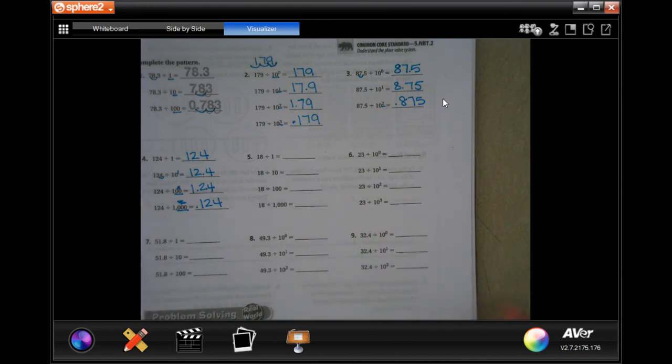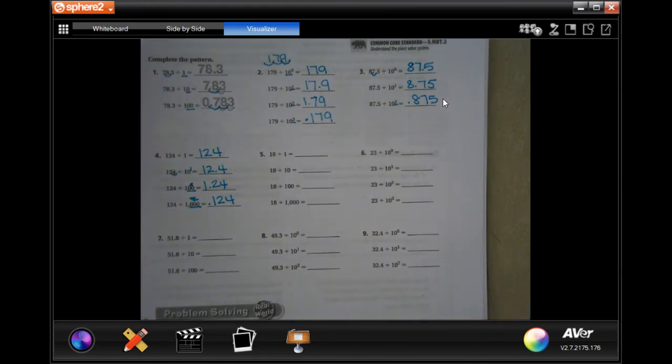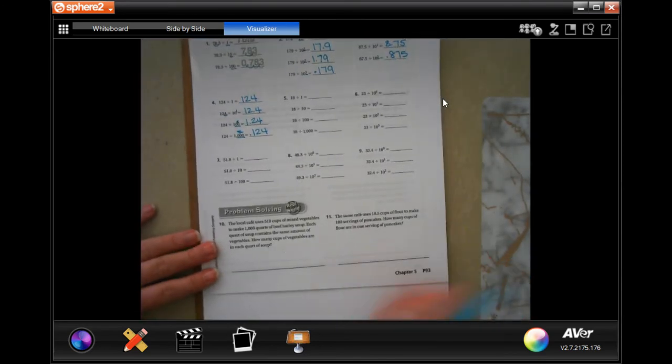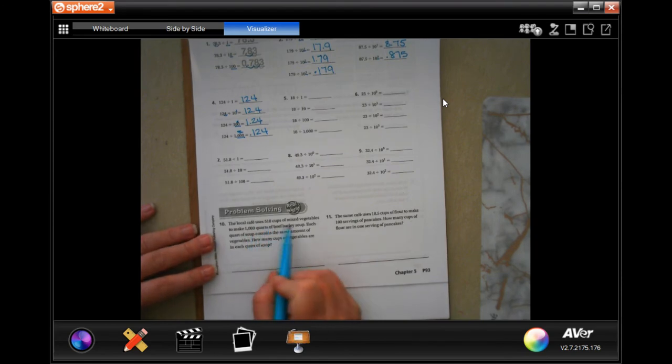You guys do five through nine. You totally can. I believe in you. We are going to do that just a little bit so that we can get down to the word problems here. The Logo Cafe uses 510 cups of mixed vegetables to make 1,000 quarts of beef barley soup. Each quart of soup contains the same amount of vegetables. How many cups of vegetables are in each quart? Well, 510, so you would have 510 with a decimal after it.